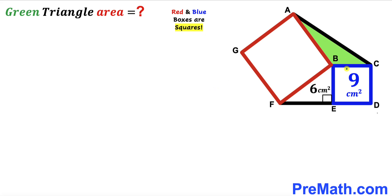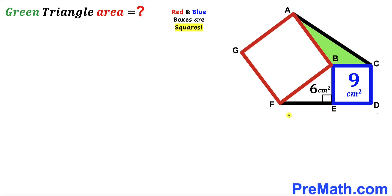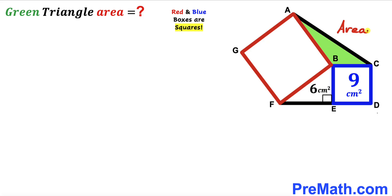Welcome to pre-math. In this video we have a blue square BCDE and a red square ABFG put together as shown in the diagram, resulting in a right triangle BEF and a green shaded triangle ABC. The area of the blue square is 9 cm² and the area of the right triangle BEF is 6 cm². Our task is to calculate the area of the green shaded triangle ABC.